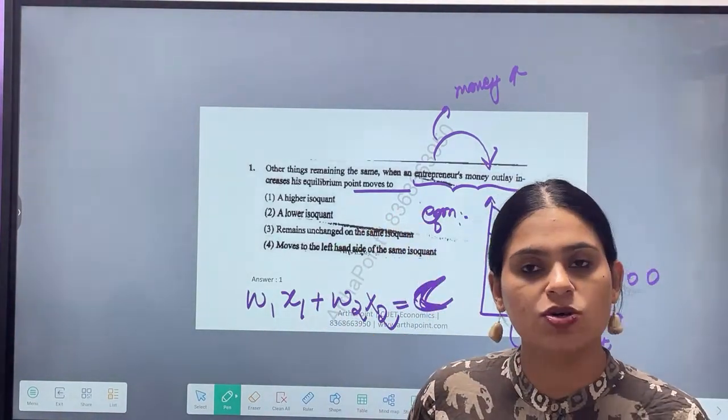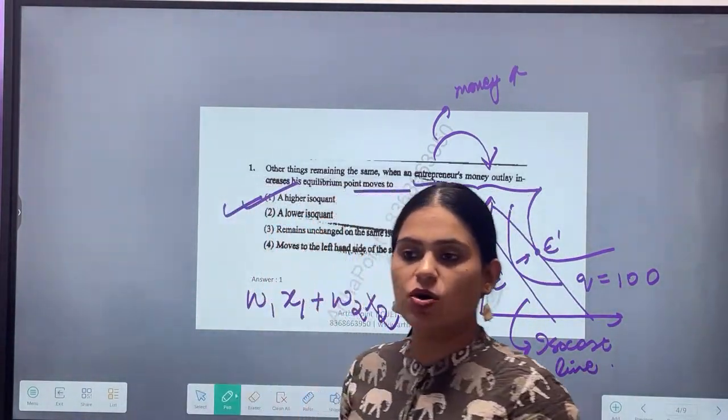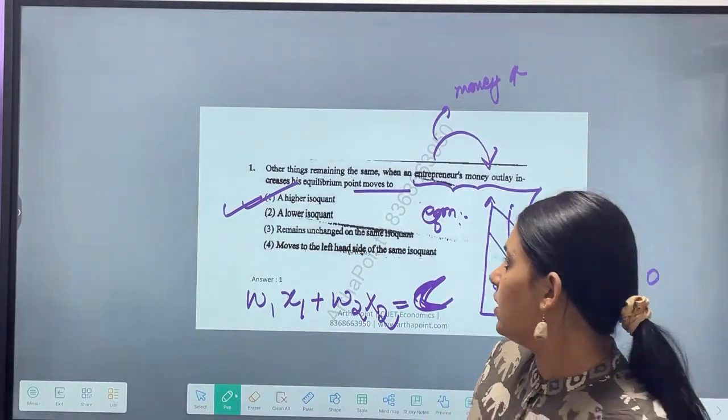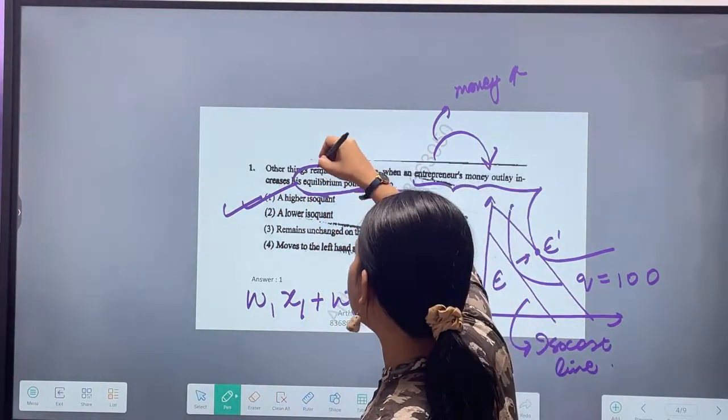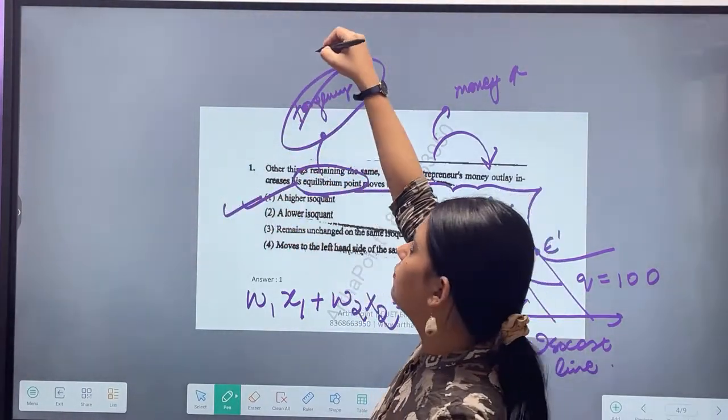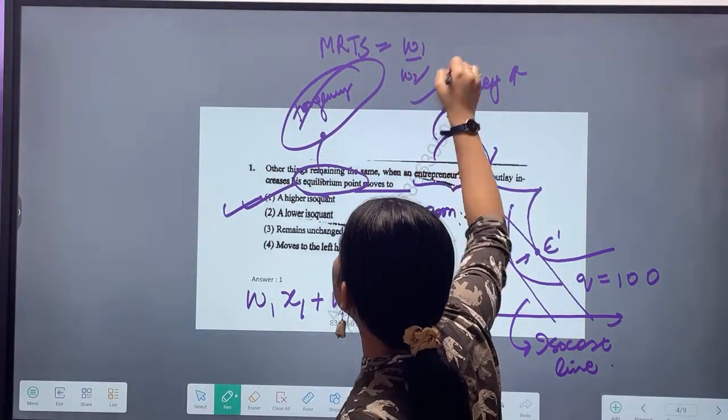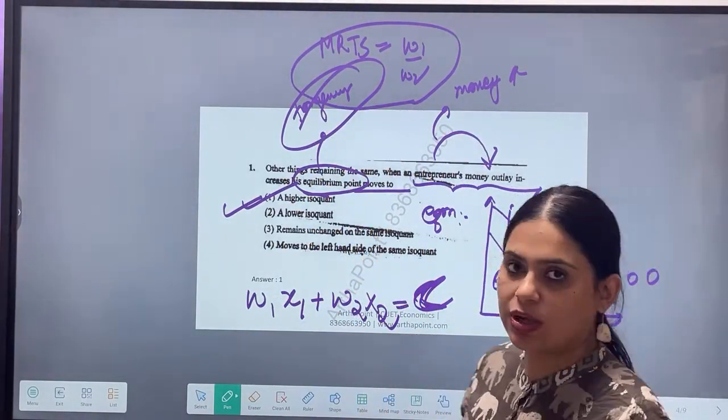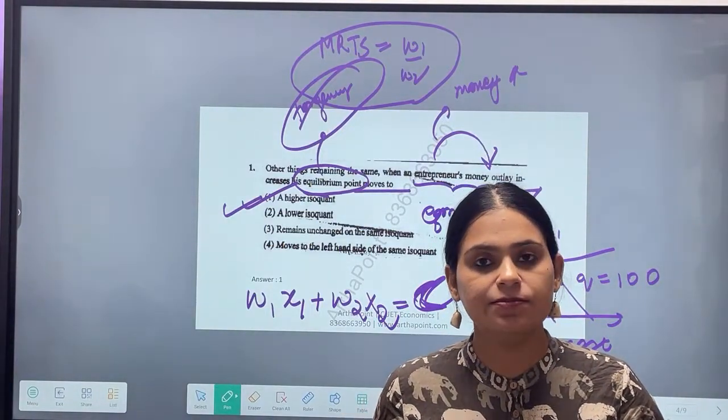It means that my equilibrium point will move outwards. I will be able to produce more because now I have more money with me. So what should be the answer to this question? A higher isoquant. The answer of the first question is going to be one. Clear? The equilibrium automatically has tangency conditions. What is tangency condition? Where your slope of isoquant is equal to slope of isocost.